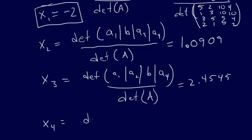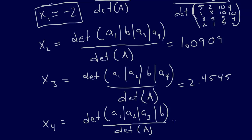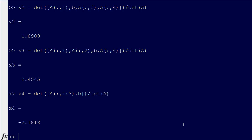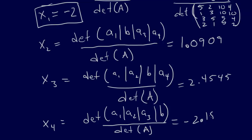Finally, X4 equals the determinant of [A1, A2, A3, B] over the determinant of A. In MATLAB: X4 equals the determinant of A colon 1 to 3 — that'll take all columns from 1 to 3 — and then B in the fourth spot, over the determinant of A. We get minus 2.1818, so X4 equals minus 2.1818.